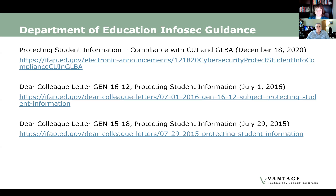Understanding those requirements for protecting student data can be extremely complicated. Colleges and universities that accept federal student aid are bound by the contract that they've signed with the Department of Education. That contract does require institutions to follow the safeguards rule of the Gramm-Leach-Bliley Act, or otherwise known as the GLBA. And then to complicate the regulatory picture, student financial data is considered controlled unclassified information by the U.S. federal government. And that means it's not unreasonable to expect that someday NIST 800-171 compliance will be written into the federal student aid contracts between higher education institutions and the Department of Education, just like GLBA is.